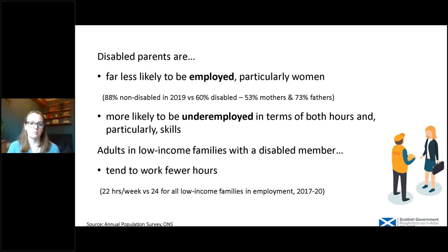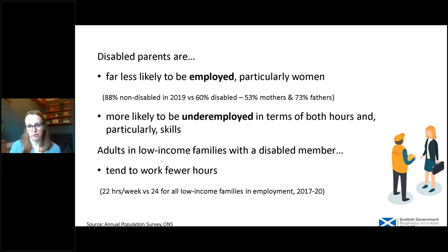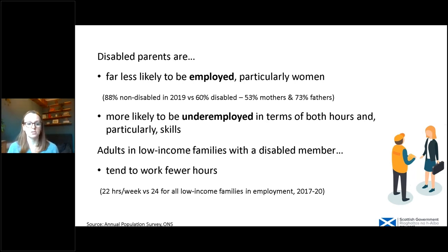Disabled parents are far less likely to be employed, and in particular women. Overall in 2019, 88% of non-disabled parents were in employment, but that dropped to 73% for disabled fathers and 53% for disabled mothers — a huge employment gap. We also know that disabled parents are more likely to be underemployed in terms of hours and skills. Adults in low income families where there's a disabled member tend to work somewhat fewer hours — 22 hours a week on average, compared to 24 for all low income families.